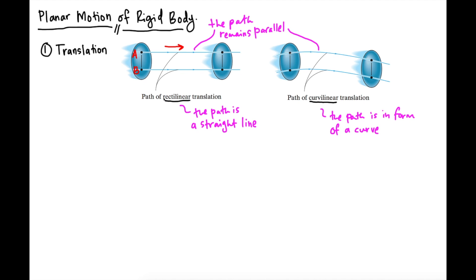In this case, if you measure the distance between point A and point B at one position, and then measure the distance at another position, it should be the same. The distance remains the same, which means the path remains parallel throughout the motion. That is the translational motion — the first type of planar motion of a rigid body.